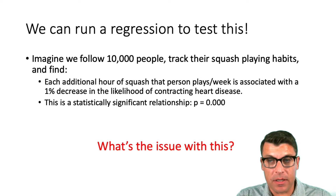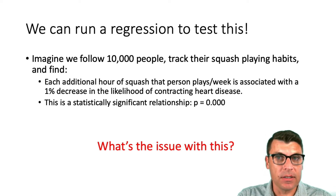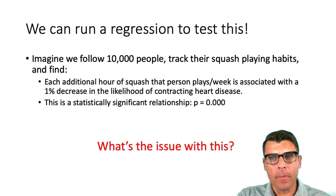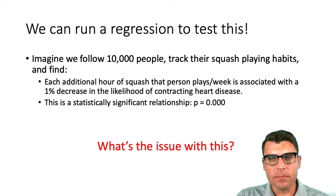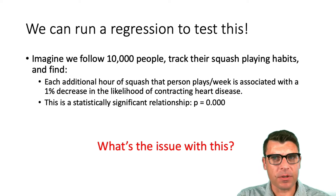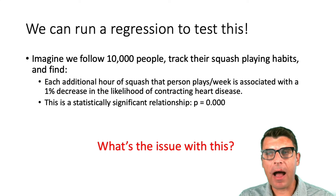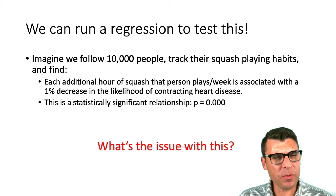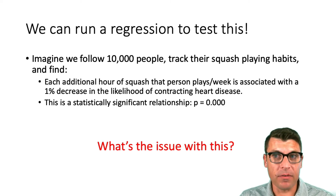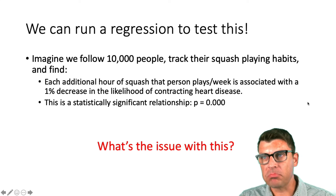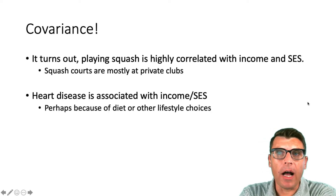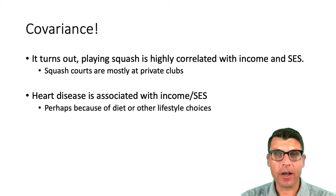But there's a core issue with this particular test. If you were to present these findings, a good statistical thinker would very instinctively respond that there's a problem — that the data are confounded. The number of hours a person spends playing squash is confounded with some other variables that might actually be contributing to the dependent variable of interest. For example, playing squash is highly correlated with income and socioeconomic status.